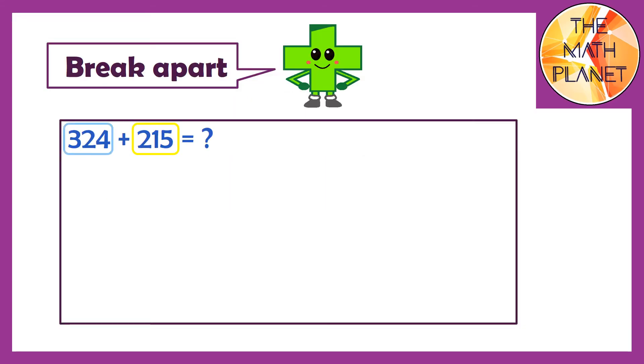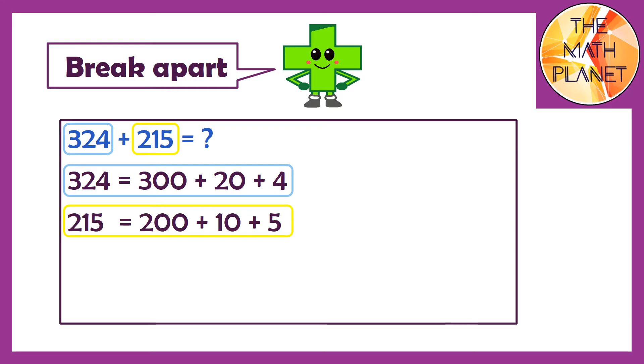If we have 324 plus 215, I can break apart the first addend into 100s, 10s, and 1s. I can also break the second addend into 100s, 10s, and 1s. Then I'll add the 100s to get 500, I'll add the 10s to get 30, I'll add the 1s to get 9. Then I'll add the 100s, 10s, and 1s together to get the sum which is 539.